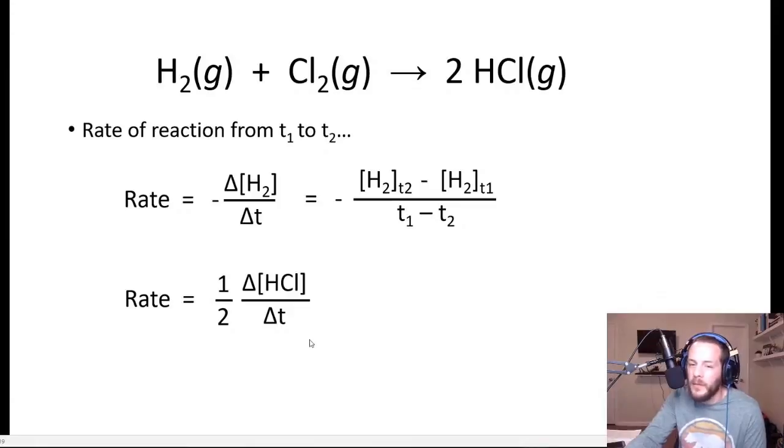Now you might be thinking, why the negative sign? Why do we put that negative in there? The reason why we put a negative in there is because since the reactants are reacting together to form products, the concentration is going to decrease over time. In other words, the concentration of hydrogen at time 2 is going to be smaller than the concentration of hydrogen at time 1. And so this expression right here, this difference between hydrogen concentration 2 and hydrogen concentration 1, this is going to be negative because this number is smaller than this number.